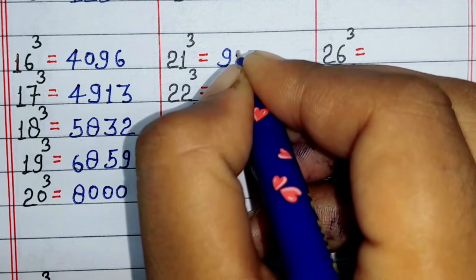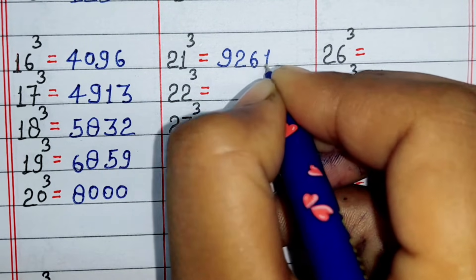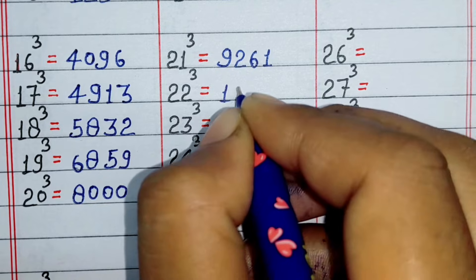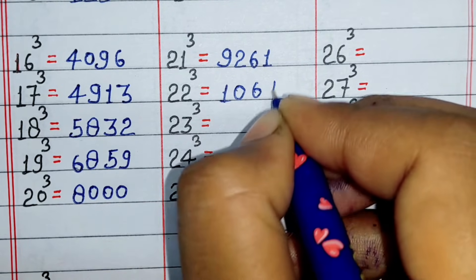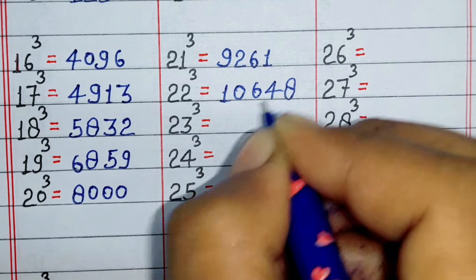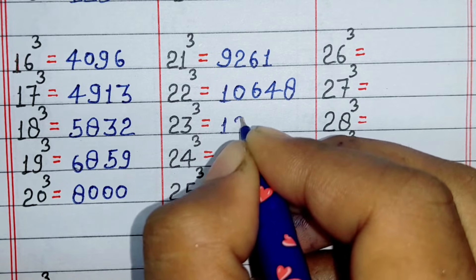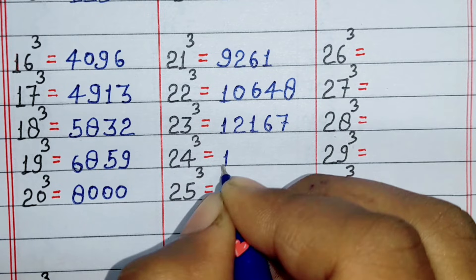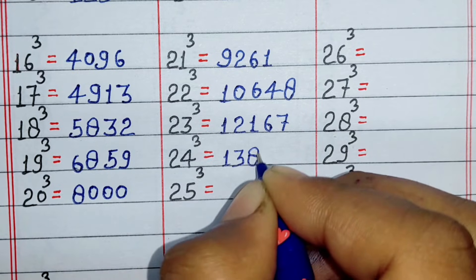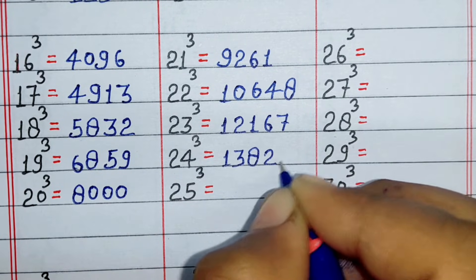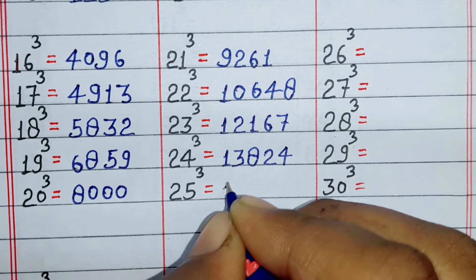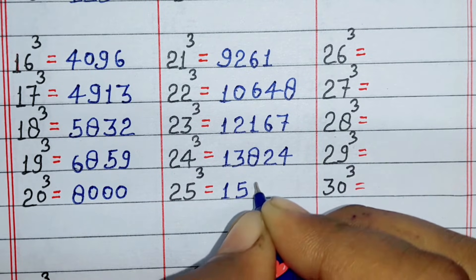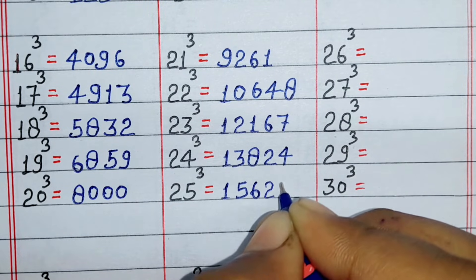Cube of 21 is 9261, cube of 22 is 10648, cube of 23 is 12167, cube of 24 is 13824, cube of 25 is 15625.